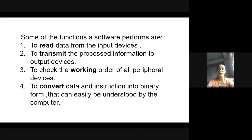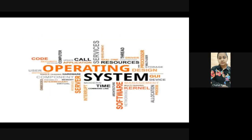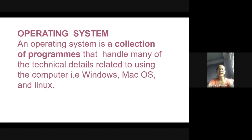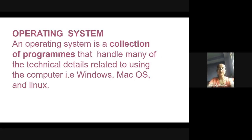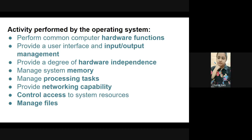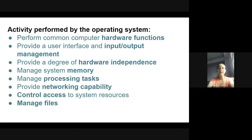Functions of system software include: converting data and instructions into binary form, which is the easiest language for computers. It also helps to read data from input devices and transmit processed information to output devices, and checks the working order of all peripheral devices. An operating system is a collection of programs that helps the computer to run. Examples are Windows, Mac OS, and Linux.